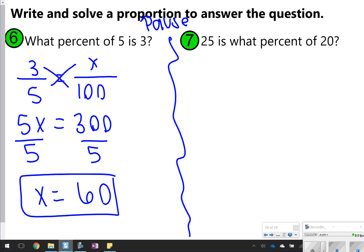Okay, number 7, 25 is what percent of 20? Again, I don't see the percent sign, so I know that percent is missing. It says 25 is what percent of 20? Out of 20. So 20 will go on the bottom for 'of', and 25 will be the 'is'.